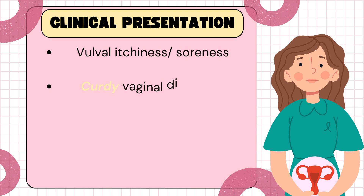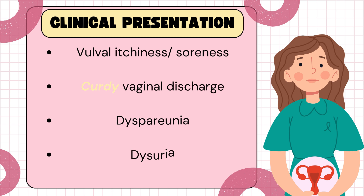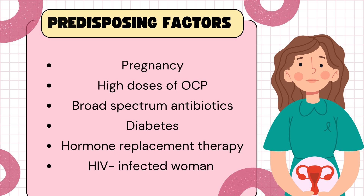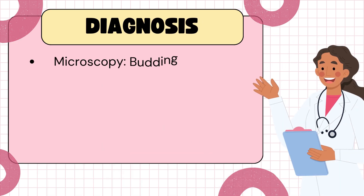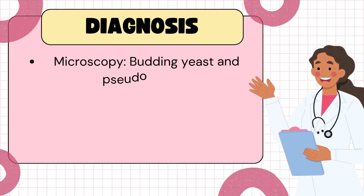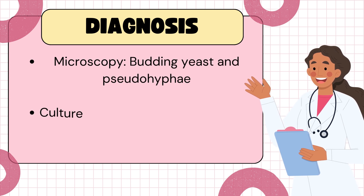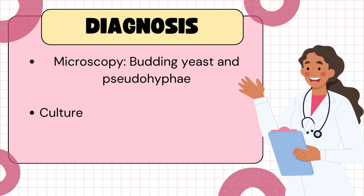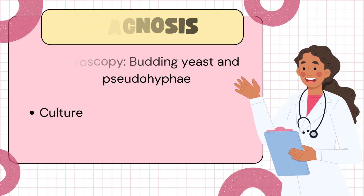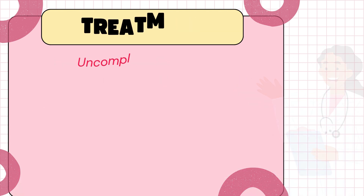These patients will present with thick white cottage cheese-like discharge, intense itching and redness of the vulva and vagina, dysuria (painful urination), and dyspareunia (painful sexual intercourse). To diagnose candidiasis, we can use microscopy or culture. On microscopy, we will be looking at budding yeast and the presence of pseudohyphae.